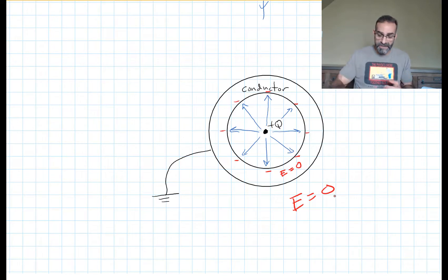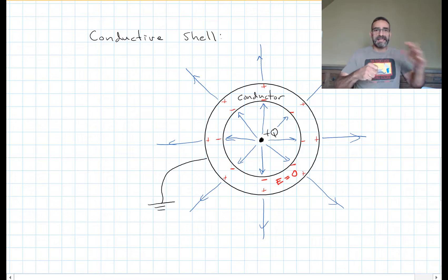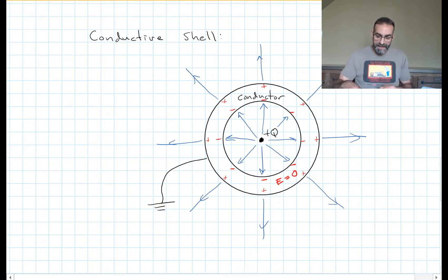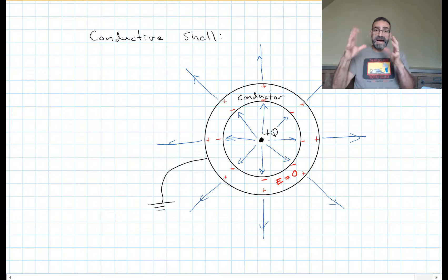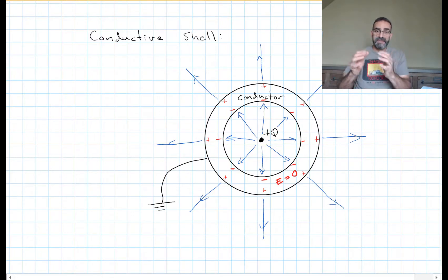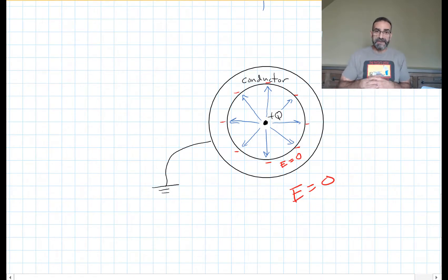Sometimes it's easier to think of both positive and negative charges moving, even though we know only electrons actually move. If we place a positive charge at the center, it attracts negative charges to the innermost surface and repels positive charges to the outermost surface. As soon as we connect to ground, those positives can move even farther apart — they can go infinitely far by leaving the shell and going to ground — and that's what they do, leaving no positive charges on the outer surface.